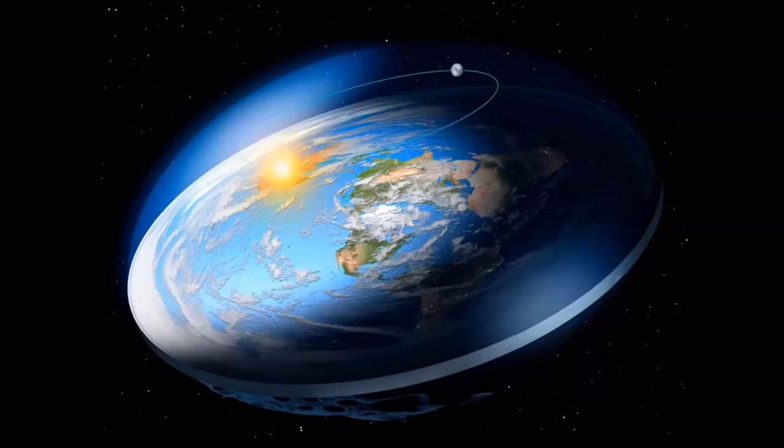Another example was the sunset in the south. This is what the path of the sun above the flat earth looks like. The sun goes down in the south and the speed is higher.